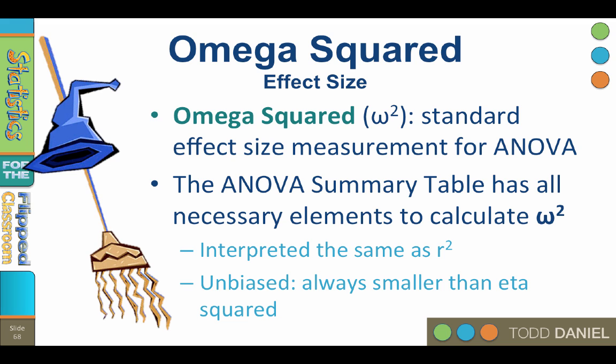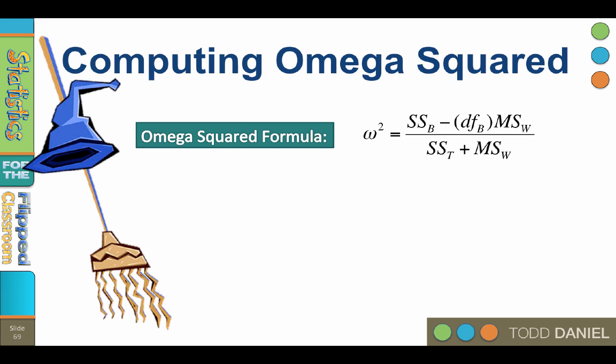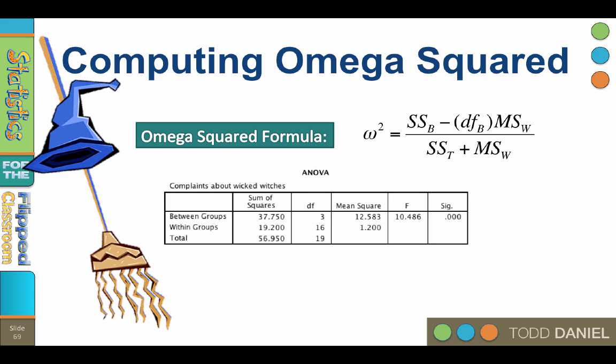Of the three, partial eta squared is the most widely reported. Omega squared is calculated using a formula that is a little more complex than the partial eta squared formula, but everything needed to calculate it can be found in the ANOVA summary table.